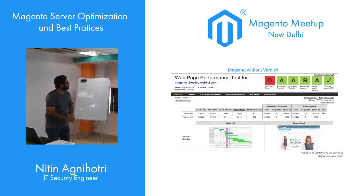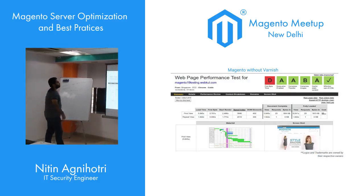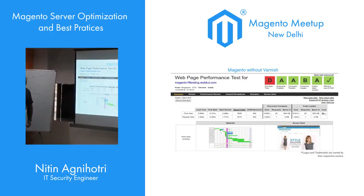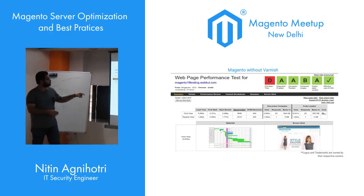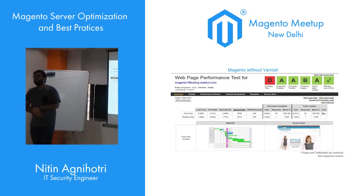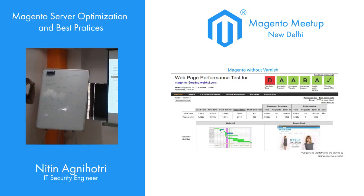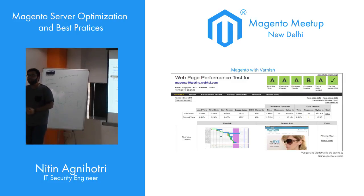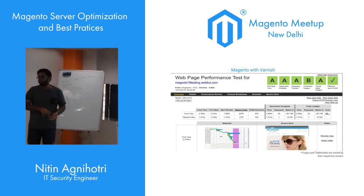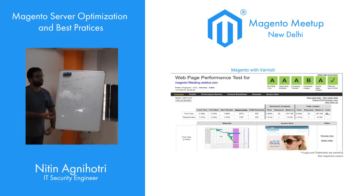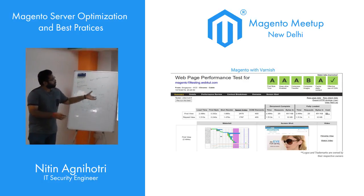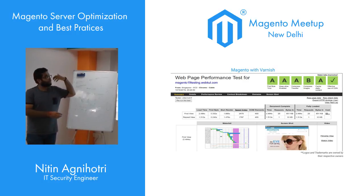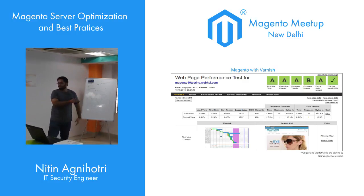Here are the findings. Our demo website loaded in 5.845 seconds without Varnish. After enabling Varnish, it loaded in 2.484 seconds — load time reduced by more than half. Varnish is a very important tool, and it doesn't require deep server knowledge. You just enable it from the Magento admin panel and you're good to go.